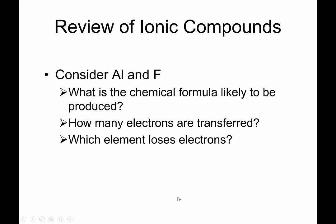So now we're going to focus on ionic bonding. So we have to consider Al and F. We want to know the chemical formula that's likely to be produced, how many electrons will be transferred, and which element loses electrons. So think about those questions, stop the video, and then come back when you think you have the answers.